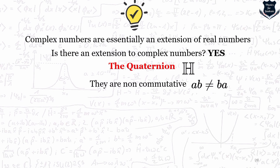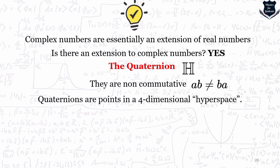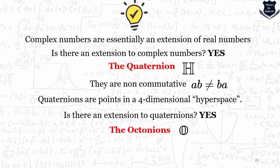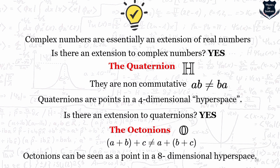Is there an extension to quaternions? Yes — these are called octonions. Quaternions apply to four-dimensional hyperspace. Octonions are non-commutative and also non-associative, meaning for arbitrary octonions a, b, c: (a·b)·c is not necessarily equal to a·(b·c). Octonions can be seen as points in eight-dimensional hyperspace and, although less studied than quaternions, have applications in string theory and special relativity. Beyond octonions, sadly, no further extension exists.